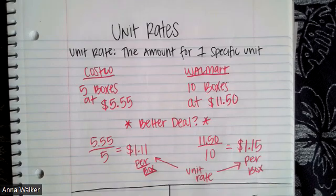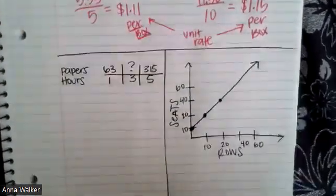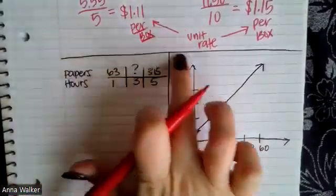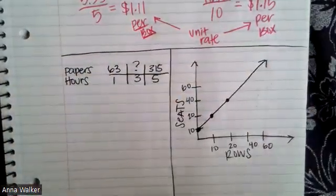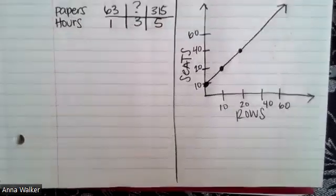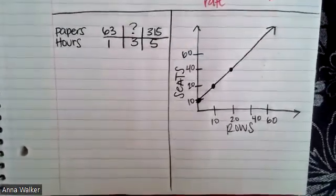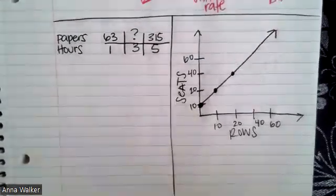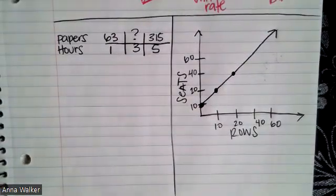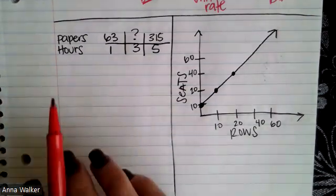Sometimes we're asked to find the unit rate but they give us some other kinds of ways to look at it. You can go ahead and draw a line to cut your paper in half and then we are going to split the page into two examples. Sometimes we're asked to find the unit rate given just some information or they might give us a graph. They might take the information and put it on a graph and we have to find out what is the amount for one specific unit.